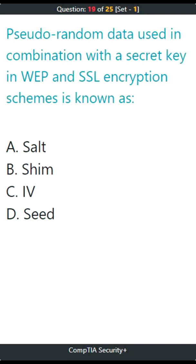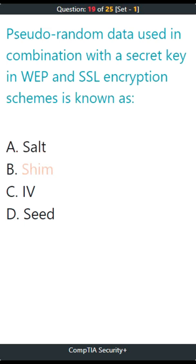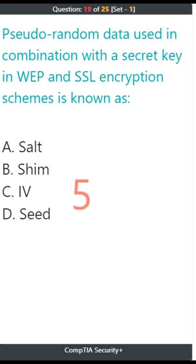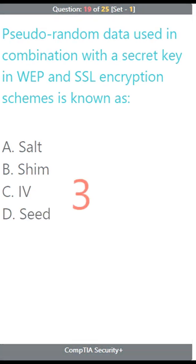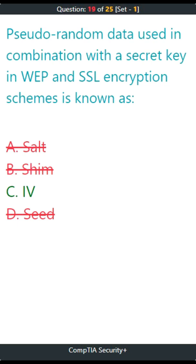Question 19. Pseudo-random data used in combination with a secret key in WEP and SSL encryption schemes is known as: A. Salt, B. Shim, C. IV, D. Seed. The correct answer is C. IV.